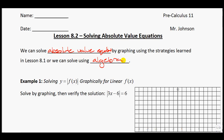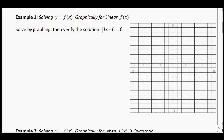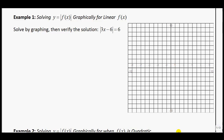The first couple of examples will use a lot of the graphing principles we learned in the previous lesson, and then we'll try it algebraically. The first example we're going to solve graphically: solve by graphing, then verify the solution of the absolute value of 3x minus 6 is equal to 6. Whenever you see something like this, think of each side as being one function and the other as another function. Then we look for where the graphs intersect.